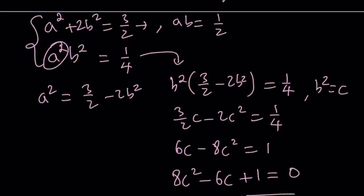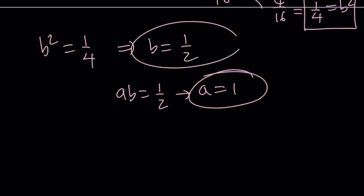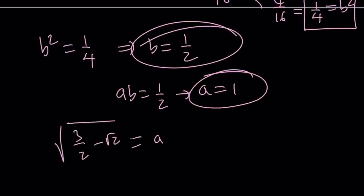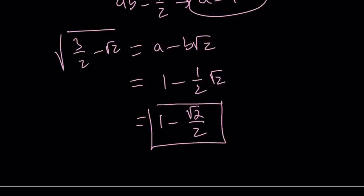With b² = 1/4 and b positive, b = 1/2. Since ab = 1/2 and b = 1/2, we get a = 1. So a = 1 and b = 1/2. Our expression was written as a minus b√2, so this becomes 1 minus (1/2)√2, or equivalently 1 minus √2/2 as our final answer. That's the end of the first method.